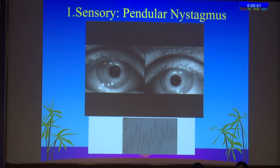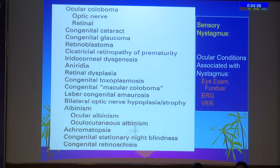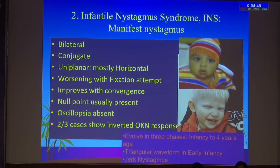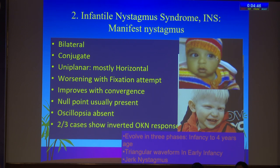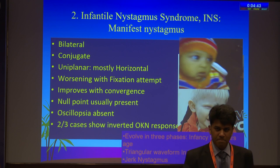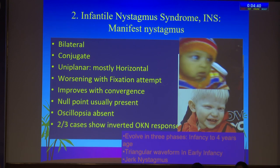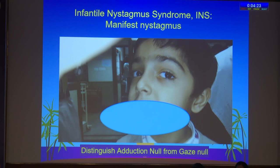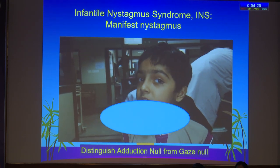The first category is sensory nystagmus, which presents as pendular nystagmus — suspect ocular problems and do a proper ocular examination including retina, fundus, ERG, and VEP. The second group, earlier called motor or manifest nystagmus, is bilateral conjugate nystagmus happening in early childhood. They evolve in phases: in infancy, side-to-side movement; later, a head posture develops. Find out which way is the head posture — if there is a head turn, distinguish an adduction null from an eccentric gaze null. If you cover the adducting eye and the null shifts to the other side, it is an adduction null; if he continues to have the same head posture, it is an eccentric gaze null.